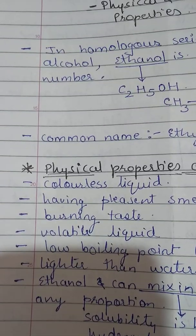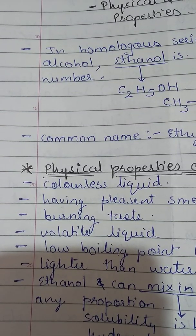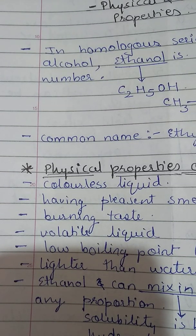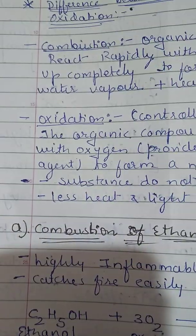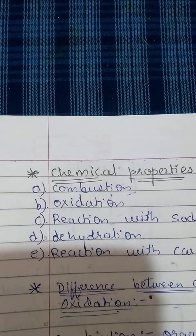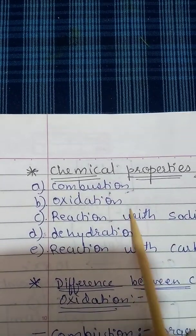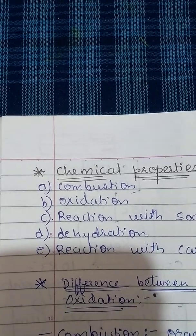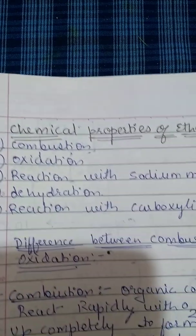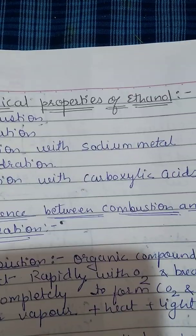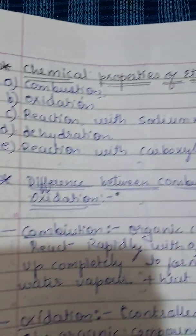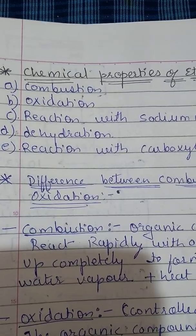You must remember all these properties one by one. Now let's move to the chemical properties of ethanol. We will discuss combustion, oxidation, reaction with sodium metal, dehydration, and reaction with carboxylic acids.